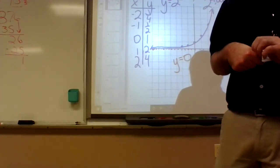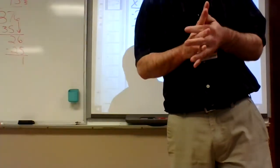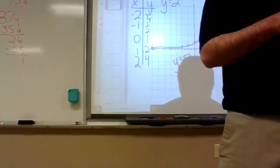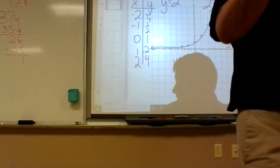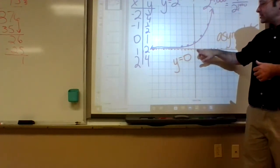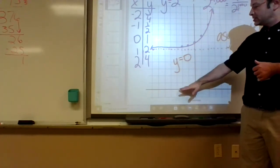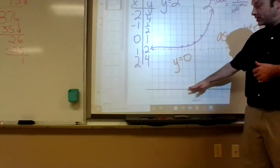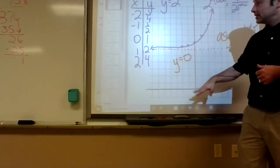Number two: if you use x-values from negative 2 to 2, you'll get up to 4 squared, which is sixteen. So you might want to count by twos on your y-axis. Keep your x-axis at the bottom because everything on these first problems is happening up high.